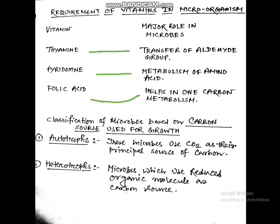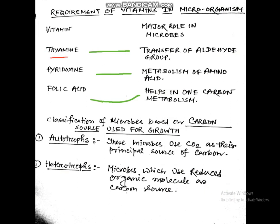Requirement of vitamins in microorganisms: Vitamin thiamine helps in the transfer of aldehyde group in microbes. Vitamin pyridoxin helps in the metabolism of amino acids in microbes. Folic acid helps in one carbon metabolism. So for one carbon metabolism, folic acid is needed; for amino acid metabolism, pyridoxin is needed; and for transfer of aldehyde group, thiamine is needed.